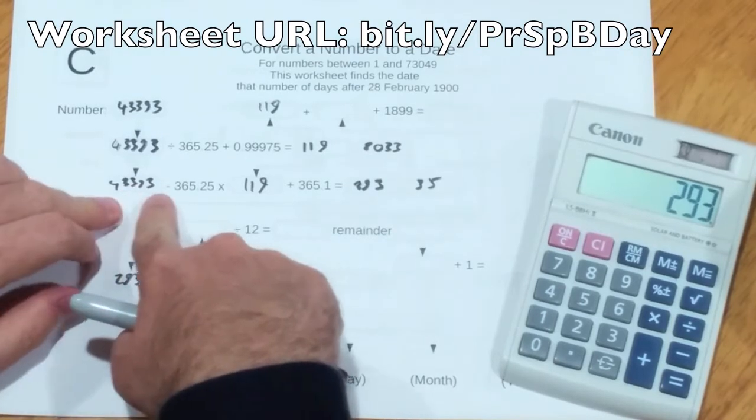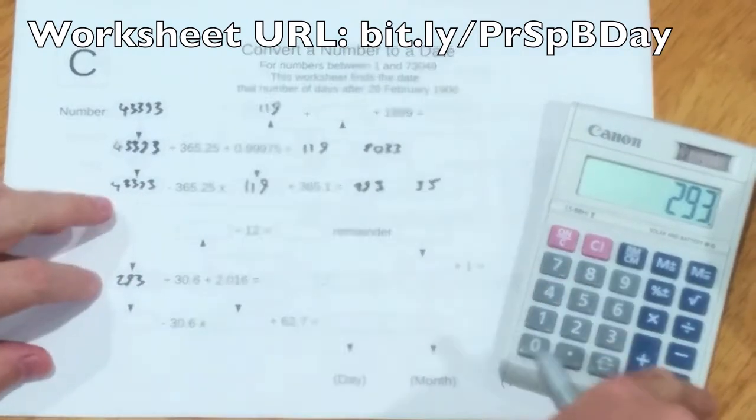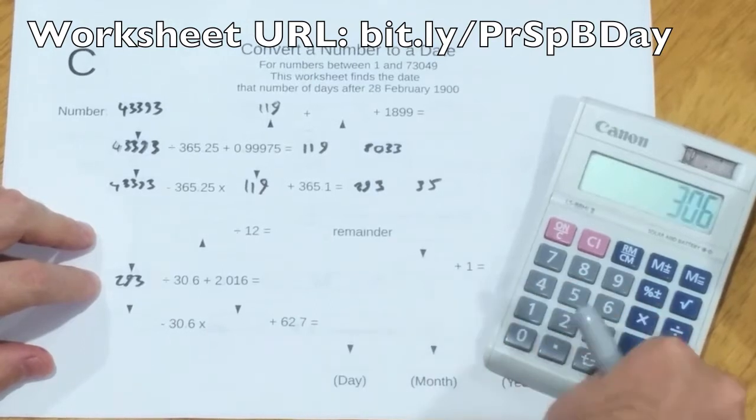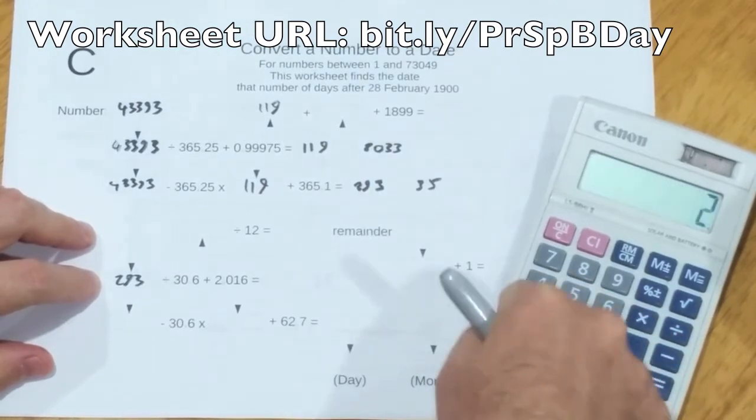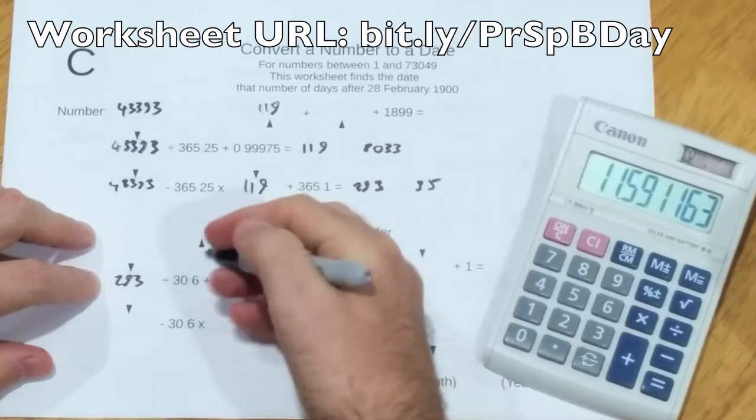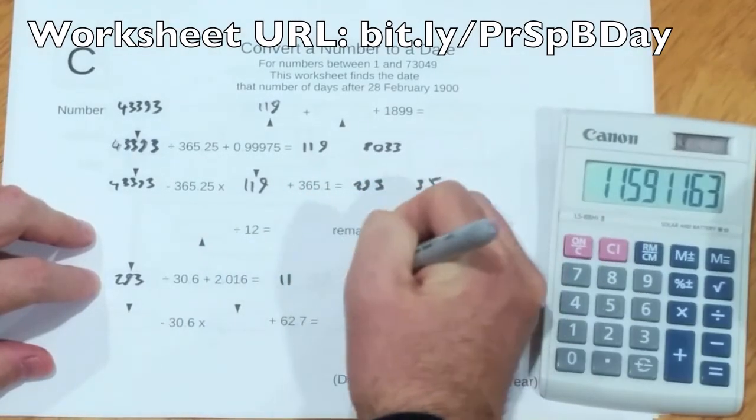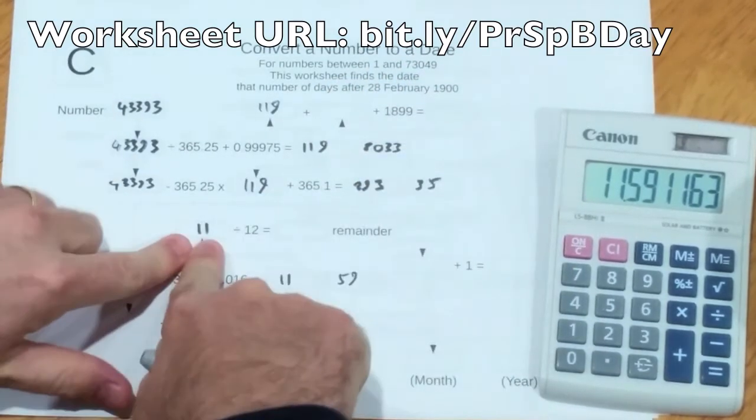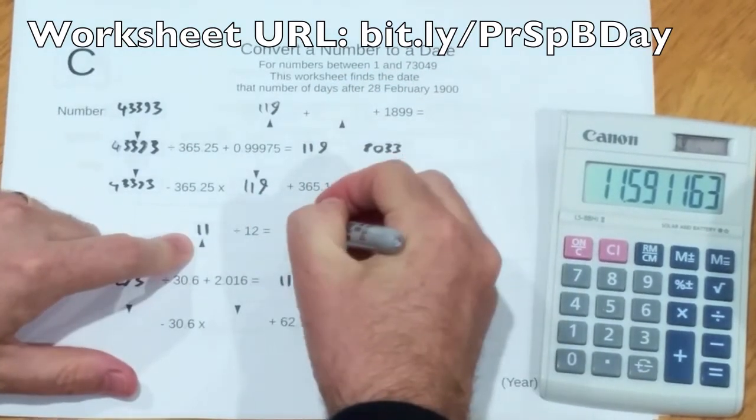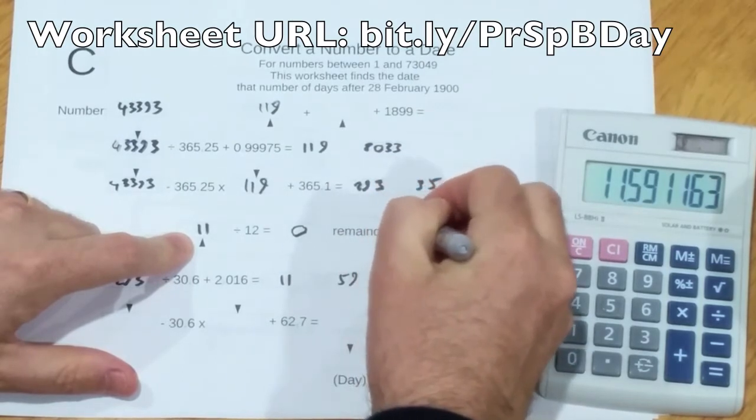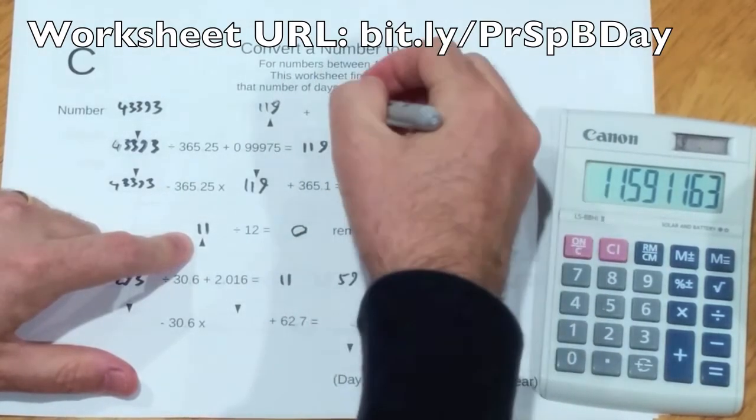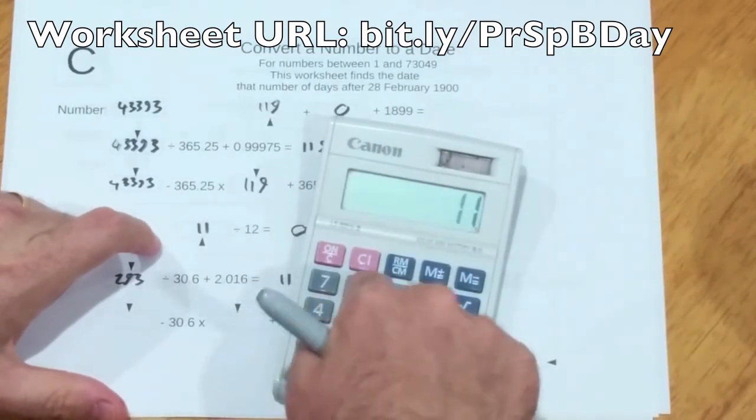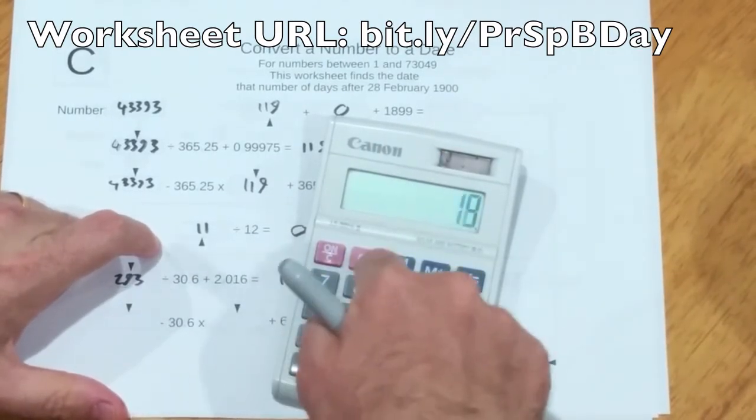That's 119 there. 165.25 times 119 is 293. The 293 gets copied here. So this is working out something. 293 divided by 30.6 plus 2.016 is 11.59. It's 11 divided by 12. 11 divided by 12 is 0, the remainder is 11.